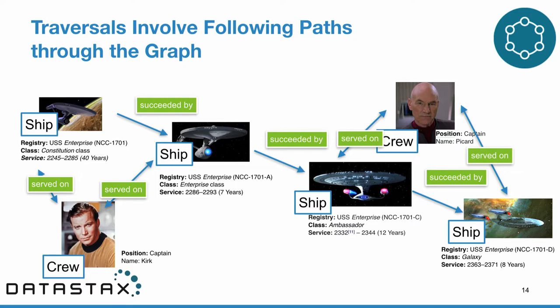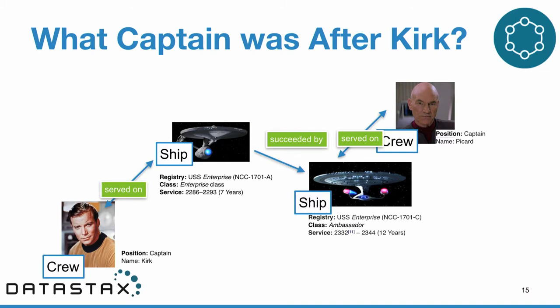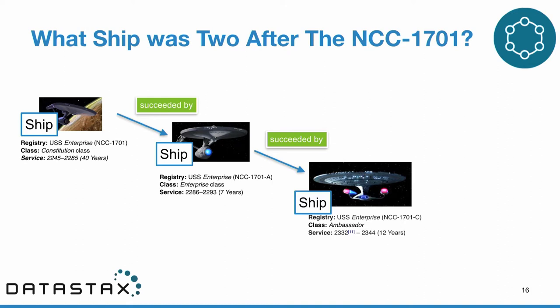With our graph, to ask 'what was the captain after Kirk?' we follow the well-documented edges: start at the Kirk vertex, move to the ship he served on, see what ship followed that, then go to the crew of that ship. Rather than describing this with joins and ID matching, we just naturally follow the edges. For 'which ship was two after the first Enterprise,' we just follow the 'succeeded by' edge twice instead of joining and matching IDs twice.